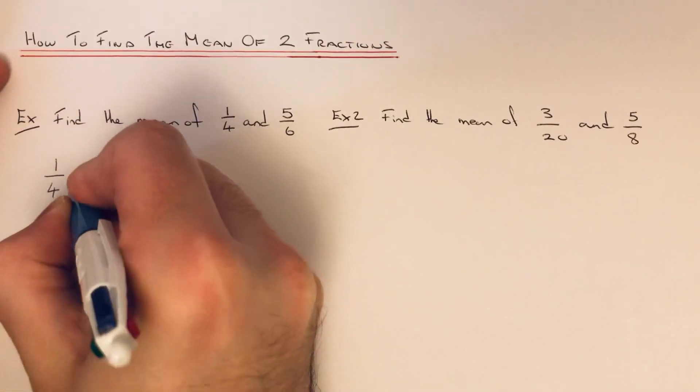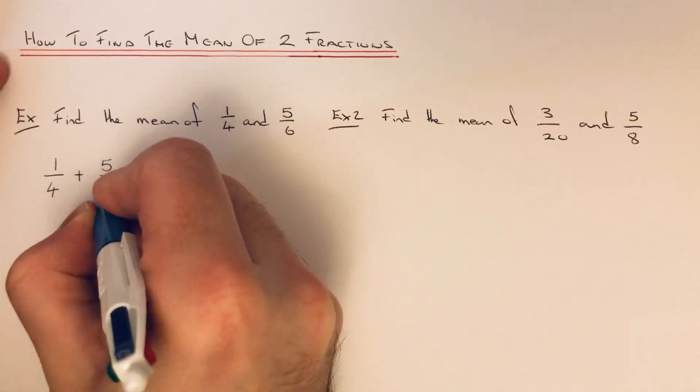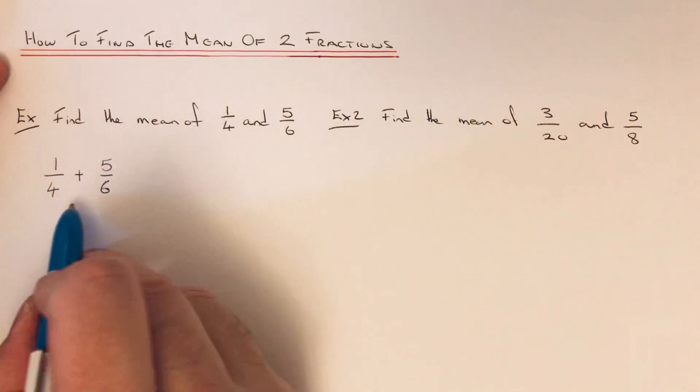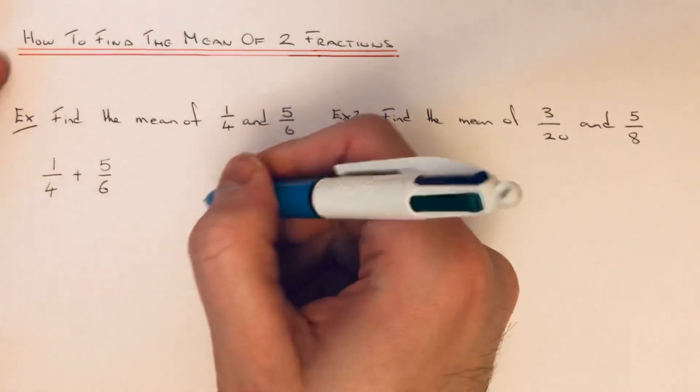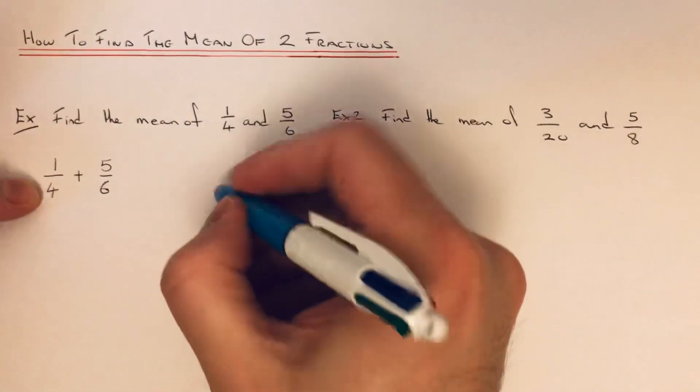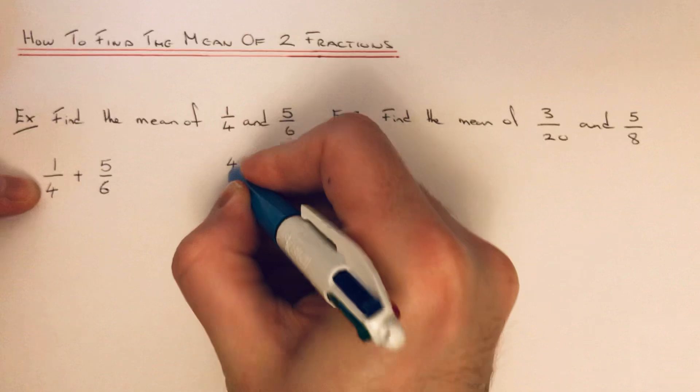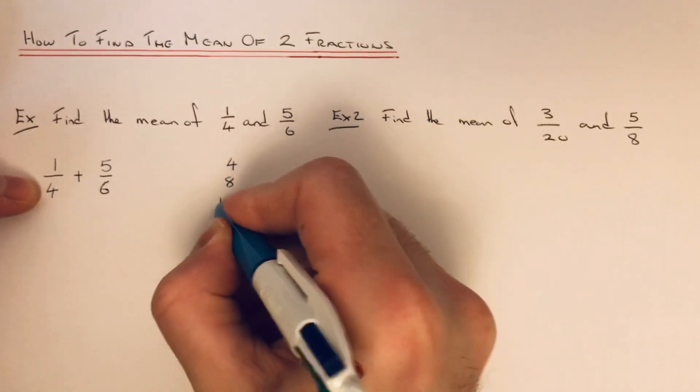Find the mean of 1/4 and 5/6. So we need to add the fractions up first of all. These two fractions have different denominators, so we need to find a common denominator.